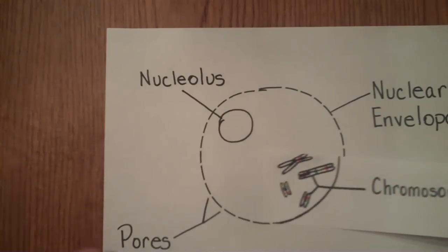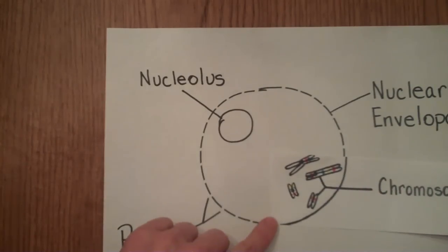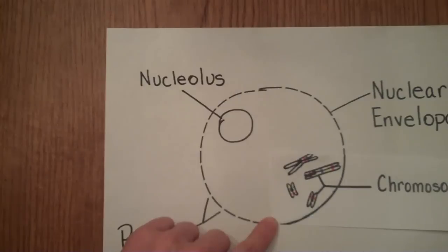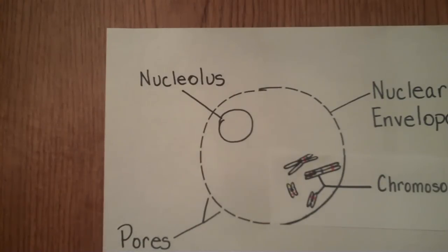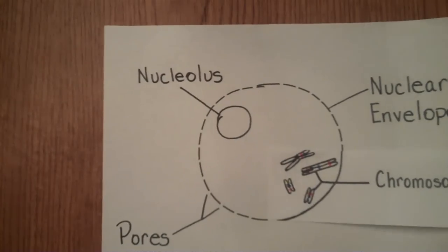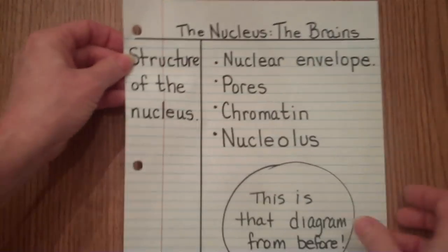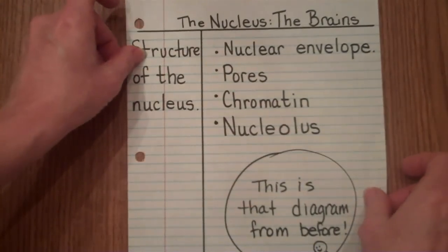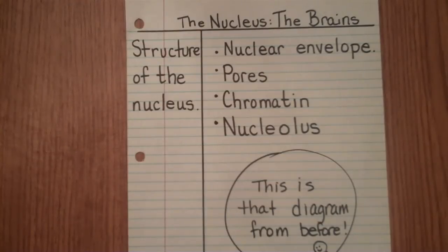I had one more thing: chromosomes are the genetic material when it's condensed, when the cell is ready to divide. So how do your Cornell notes look now? Press pause if you need to.